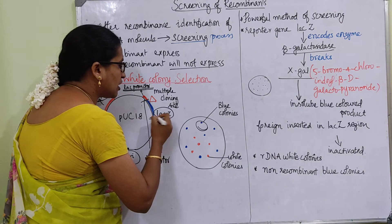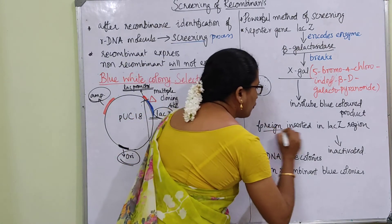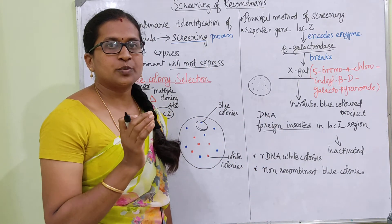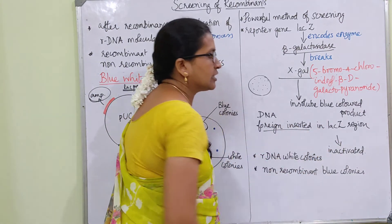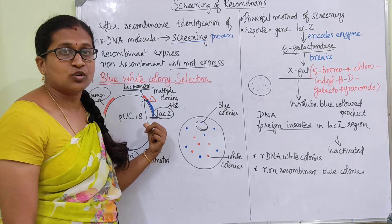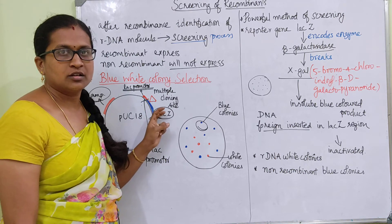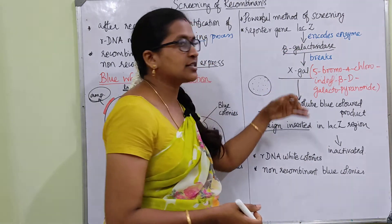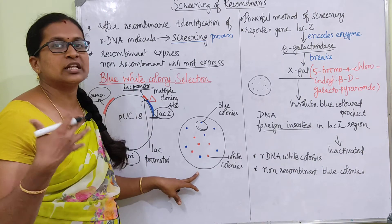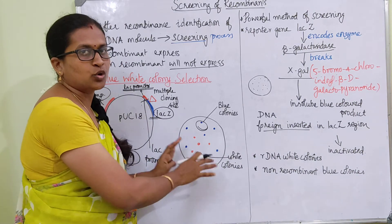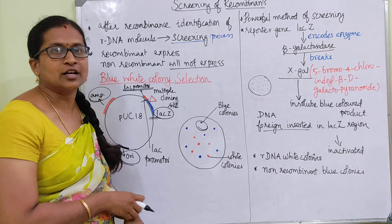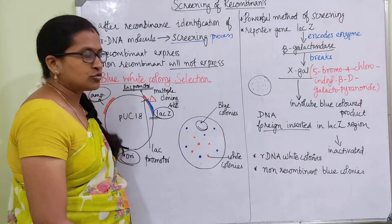In this particular vector, we have multiple cloning sites within the lac Z region. When foreign DNA is inserted into the lac Z region, the lac Z gene gets inactivated — it gets stopped. So when foreign DNA is inserted, the beta-galactosidase enzyme cannot be produced, and therefore the X-GAL cannot be broken down. In recombinants, some colonies will be blue in color and others will not produce blue color.